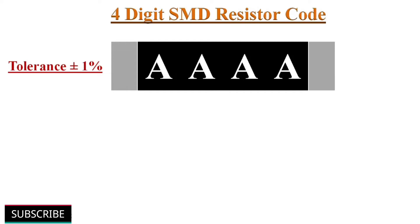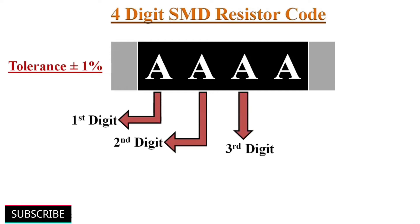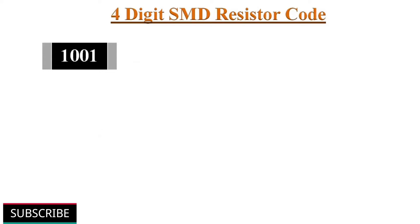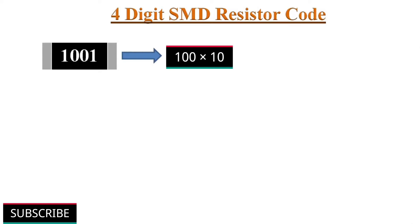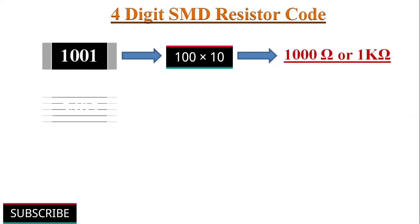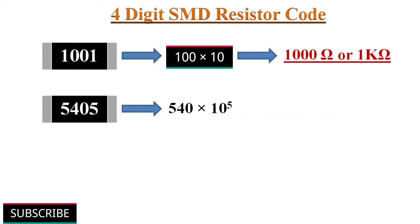The 4-digit SMD resistor marking scheme is used for precision surface mount resistors with a tolerance of plus or minus 1%. It is very similar to the 3-digit scheme — the only difference is that the first 3 digits indicate the 3-digit numerical resistance value, and the 4th digit gives the multiplier as a power of 10. For example, the code 1001 gives 100 multiplied by 10, which equals 1 kilo ohm. And the code 5405 gives 540 multiplied by 10 to the power of 5, which equals 54 mega ohms.